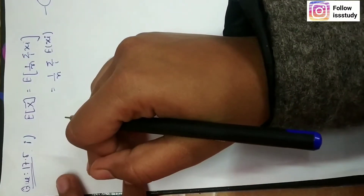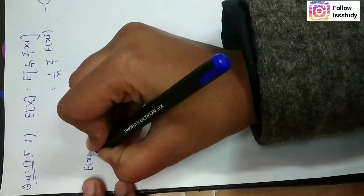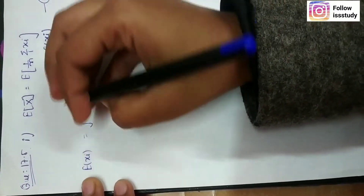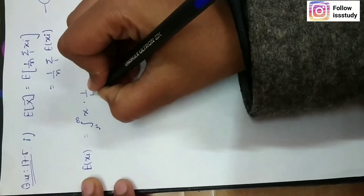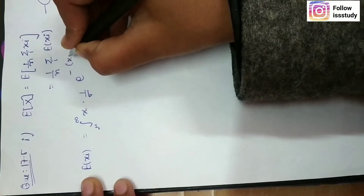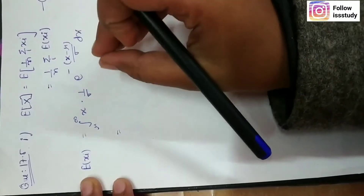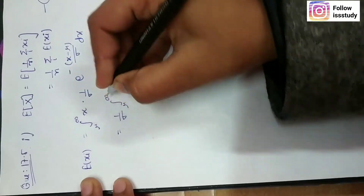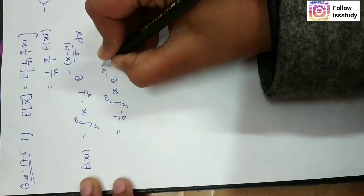Now, if we look at the normal distribution, we will find the expectation of x̄. We find E(xᵢ), which is the integral from μ to ∞ of x times (1/σ) e to the power of minus (x minus μ) upon σ dx. The constant 1/σ is taken out, giving us the integral from μ to ∞ of x times e to the power of minus x upon σ.